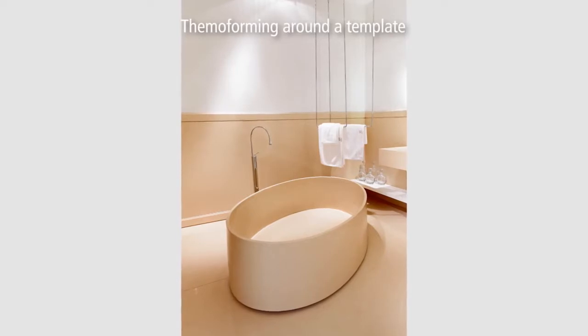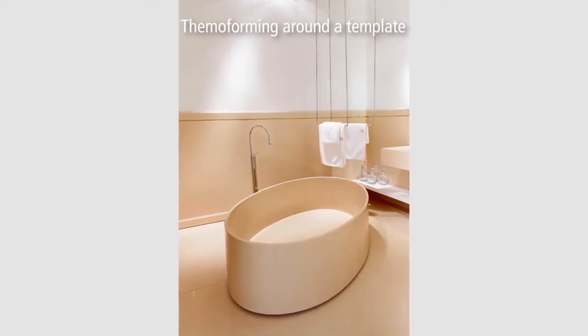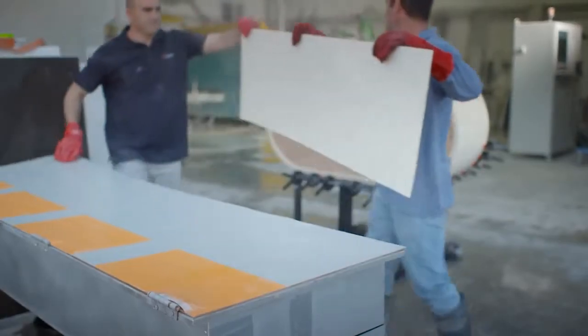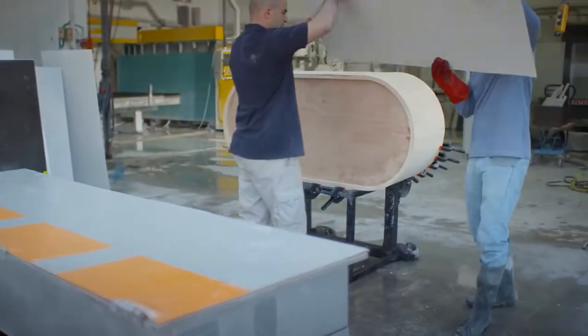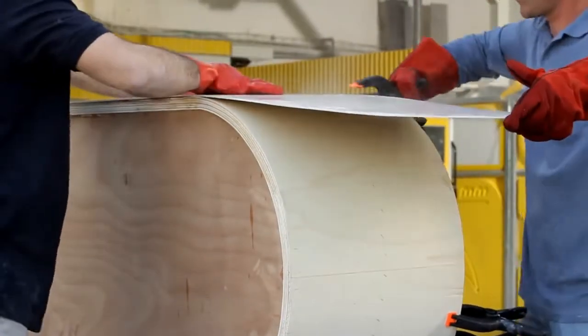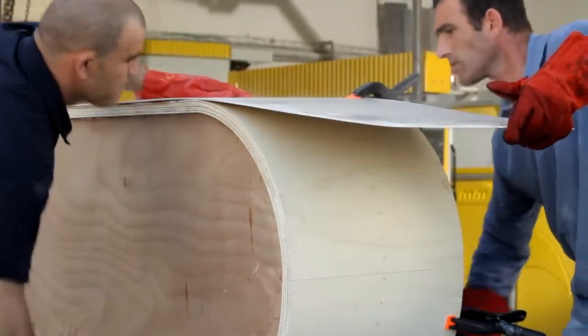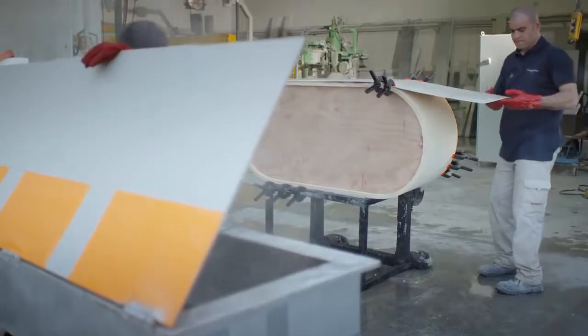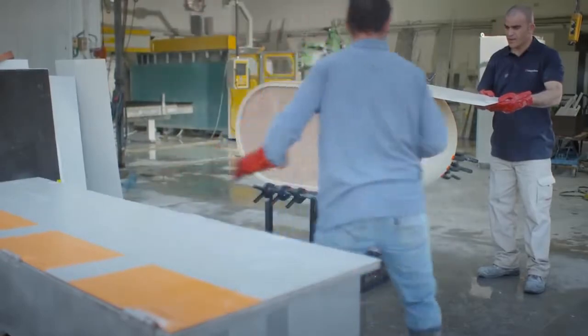This bathtub was made with the thermoforming around the template technique. Bend the flexible Caesarstone around the template and secure it with clamps. You will need to pour hot water over the Caesarstone a few times to keep it flexible, otherwise it may break.